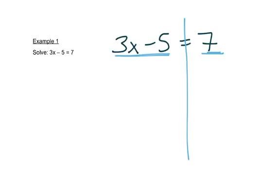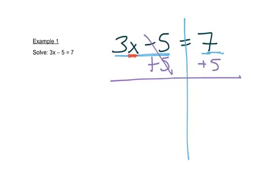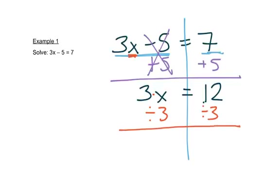So we look at the side — the only letter in this problem is right here, so we want to get that letter by itself. We start by moving this minus 5; opposite operation from minus is plus, so we'll add 5 to both sides. This cancels out leaving us with 3x on the left. Keep the equal sign, and then 7 plus 5 is 12. Now the last step is we need to finish getting that x by itself. It's 3 times x, so the opposite of multiplication is division — we'll divide both sides by 3, which leaves us with x equals 4.